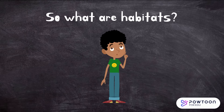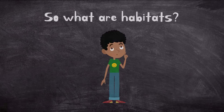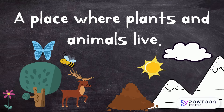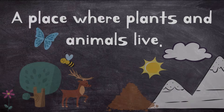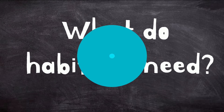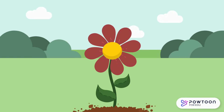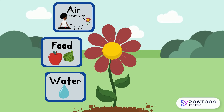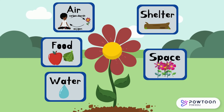So what are habitats? A habitat is a place where plants and animals live. It is made up of living and non-living things around them. What should each habitat have that living things need to survive? The habitat should have water, food, air, shelter and space.